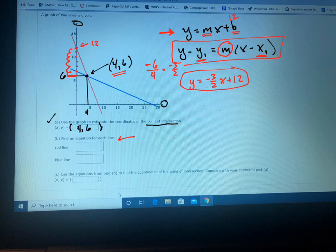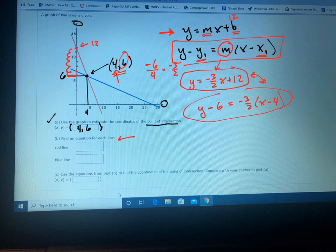You need the slope, which is negative three halves. That equation would be Y minus 6 equals negative three halves times X minus 4. By the way, these two equations are the same, they're just written in different forms.